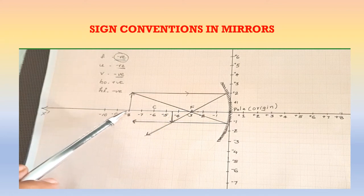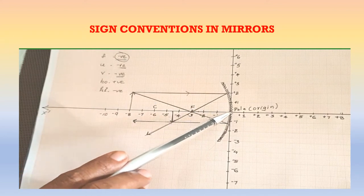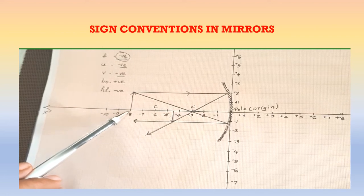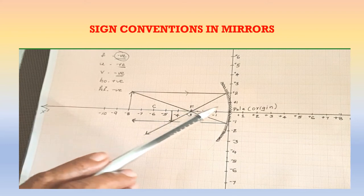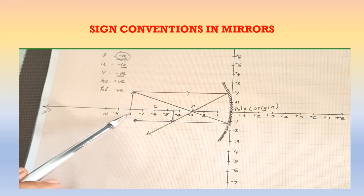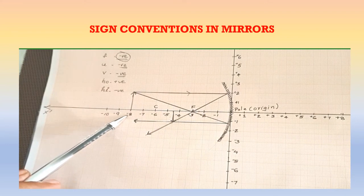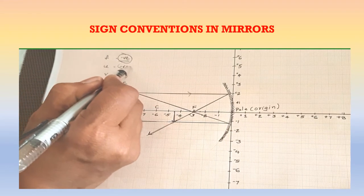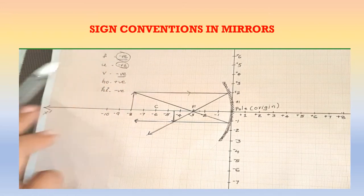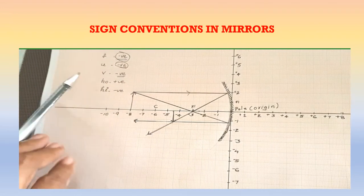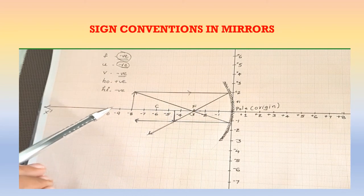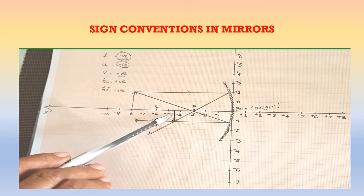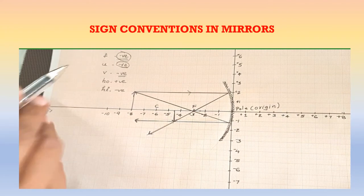Now think about the object distance U — the distance between the pole and the object. That is also on the left side of the origin, so when we measure it we get −8. So U is also negative. Similarly, V is also negative because the image is formed on the left side of the origin, giving a negative number.